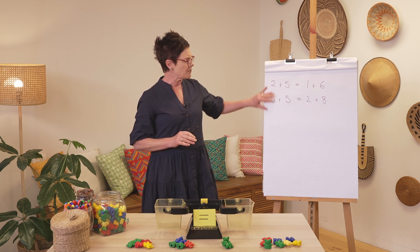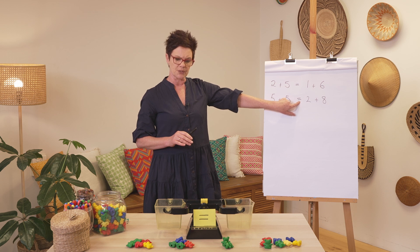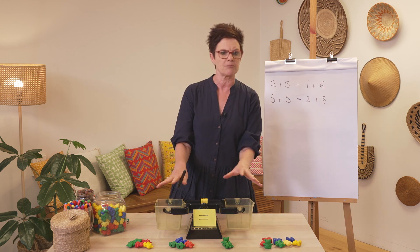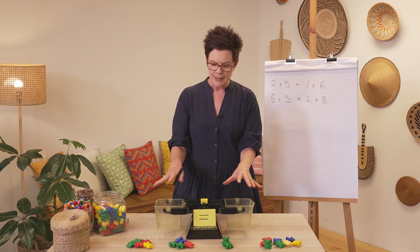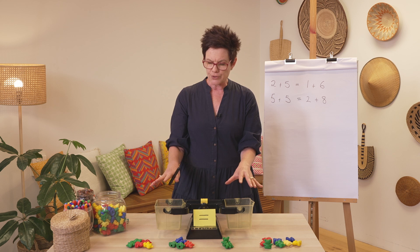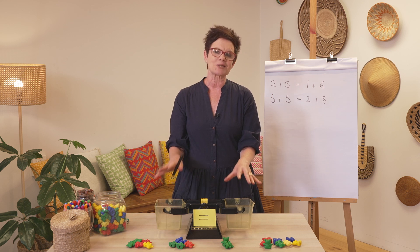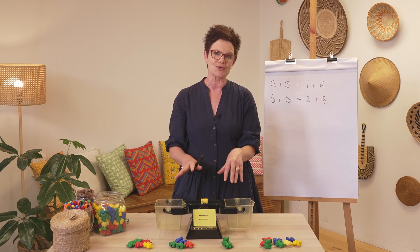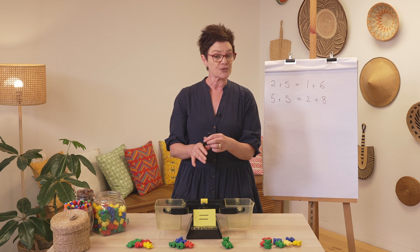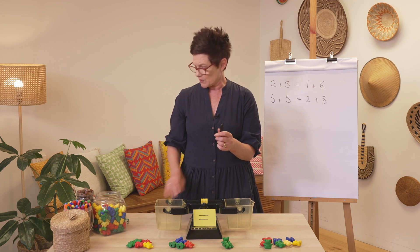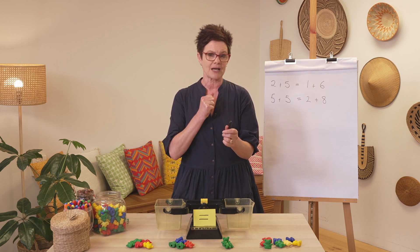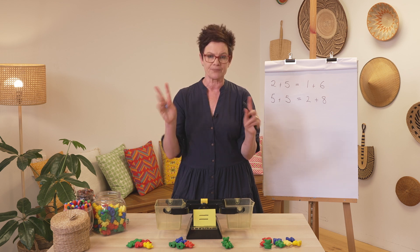Now let's have a think about that unknown part. Now that we know things are balanced beautifully with the equal sign and we can test it on our balancing scales, we're going to make some number sentences that are true. To do that we're going to need a dice. Press pause while you get ready.